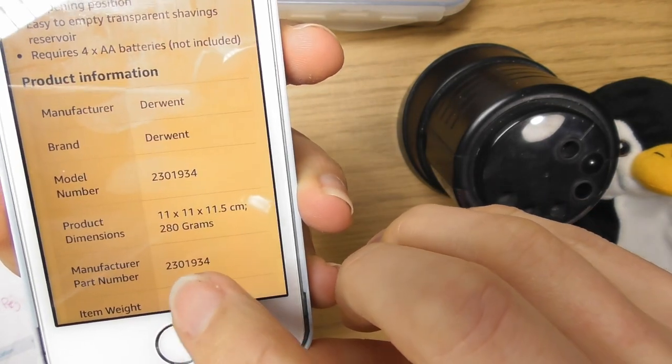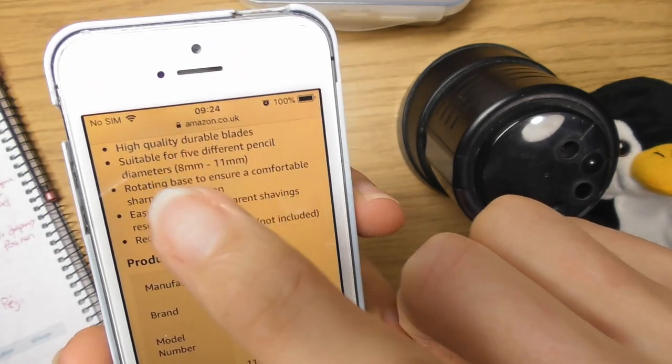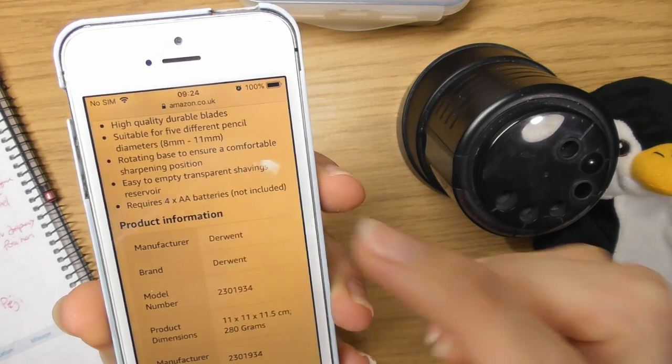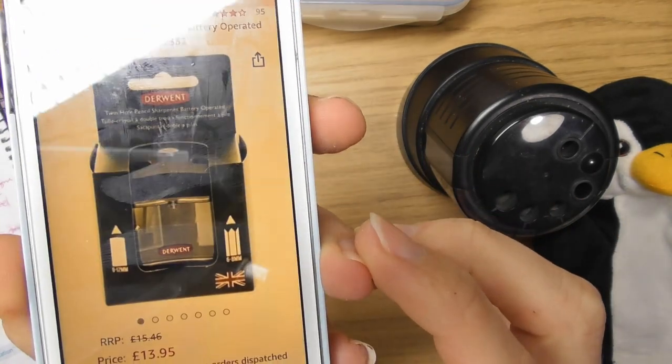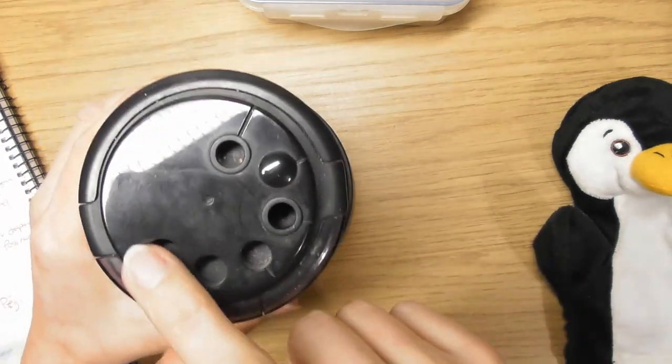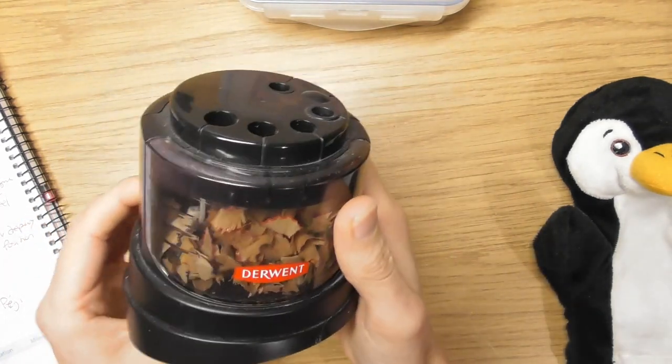So this one the model number is that. Well that's the model number and that's a little bit of information about it. It takes four little batteries, the little thin ones, but they replaced it with this one which is a twin one. But this one here has actually got five little holes so you can put different sized pencils in it which is pretty cool.